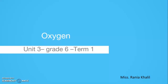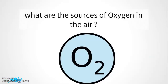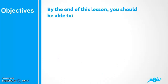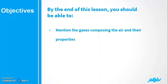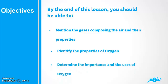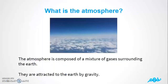Hello and welcome dear students. Today we're going to work on Unit 3, Lesson 1, which is about oxygen. This lesson is designed for Grade 6. I have a question for you: what do you think about the sources of oxygen in the air? By the end of this lesson you should be able to: number one, mention the gases composing the air and their properties; number two, identify the properties of oxygen; number three, determine the importance and usages of oxygen gas.